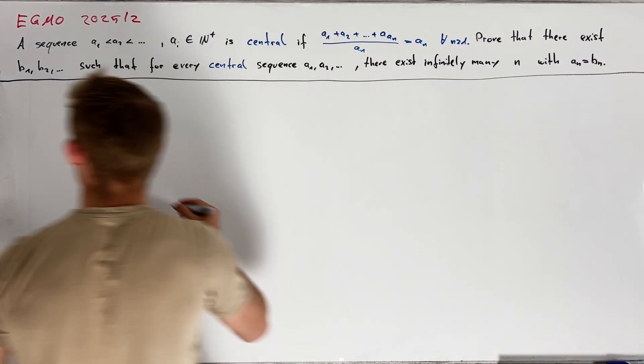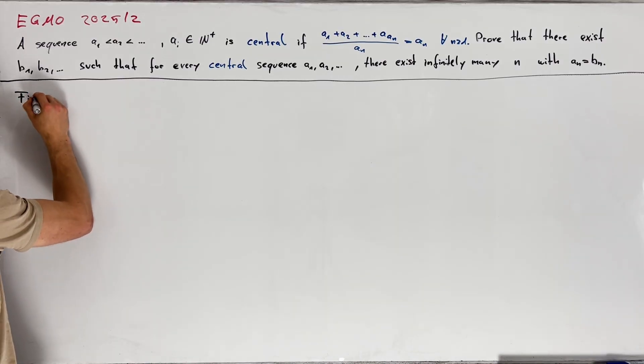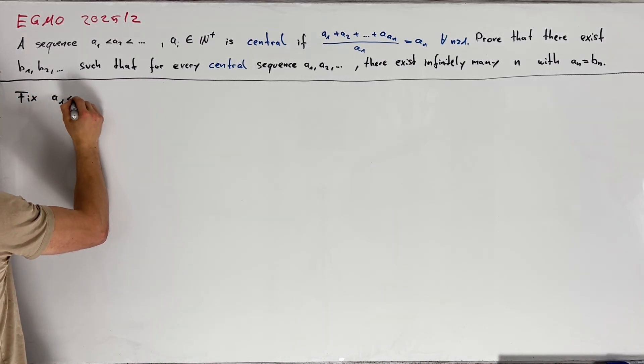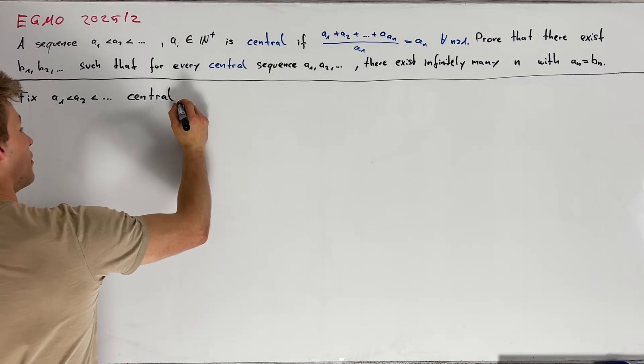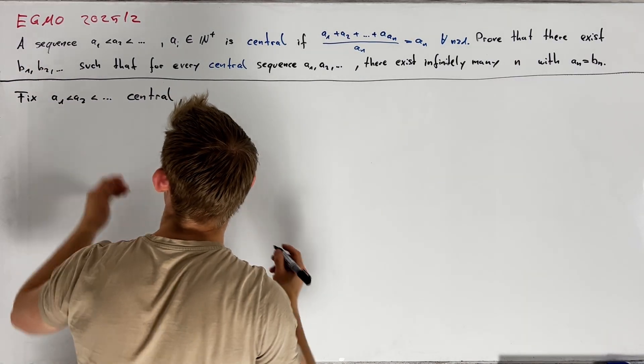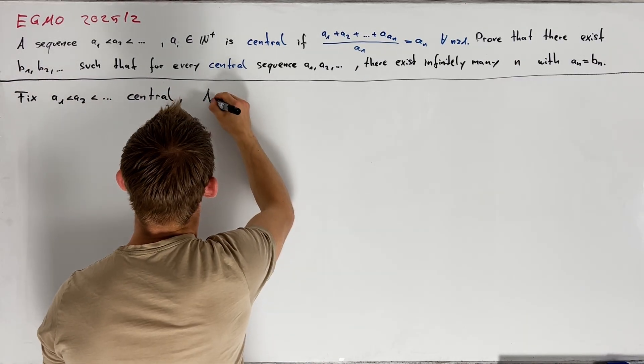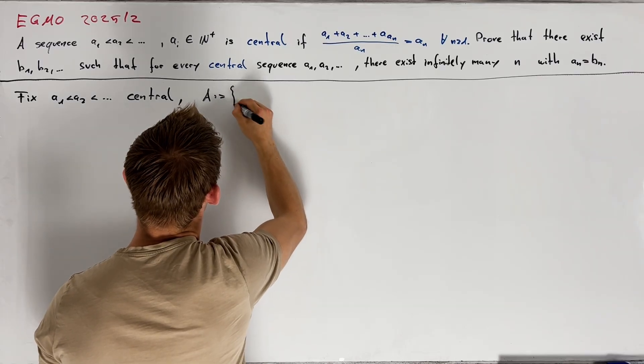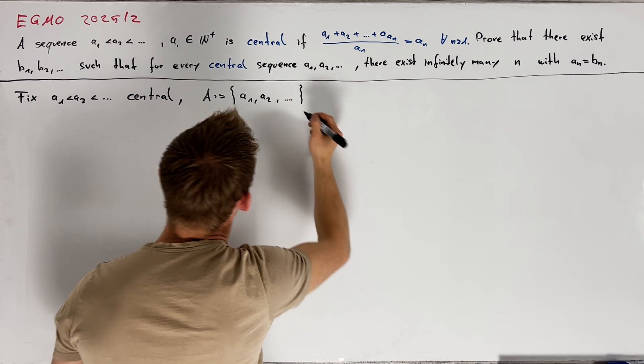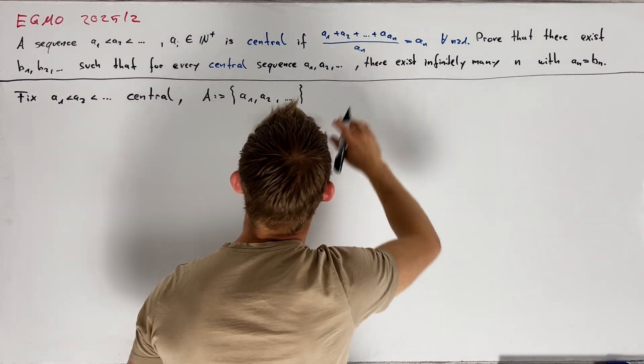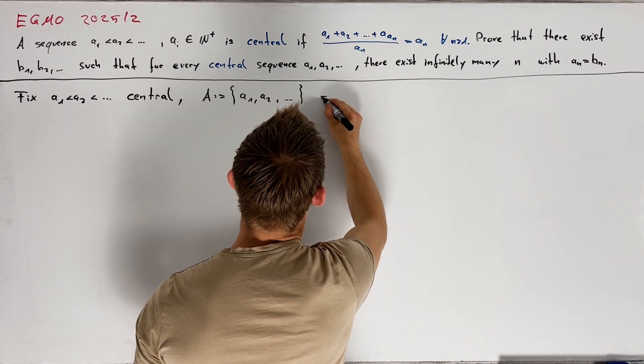First of all we want to fix one central sequence a1 less than a2 and so on which is the sequence we want to work with. For convenience I also want to name the set of all sequence members so define A to be the set consisting of a1, a2 and so on.